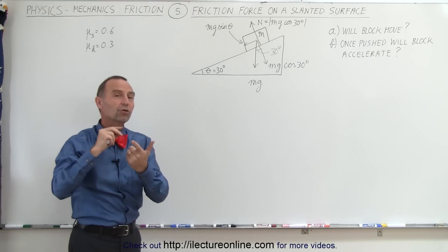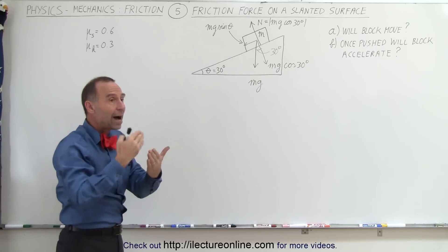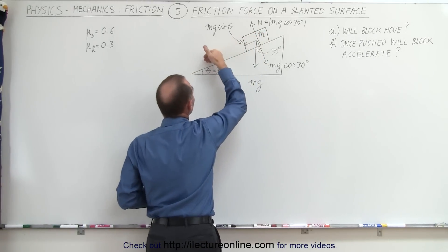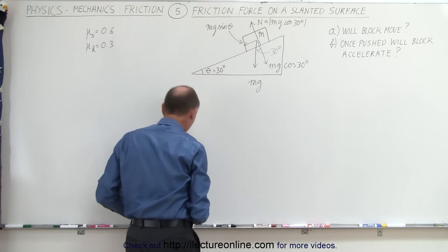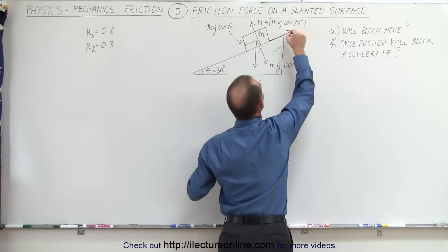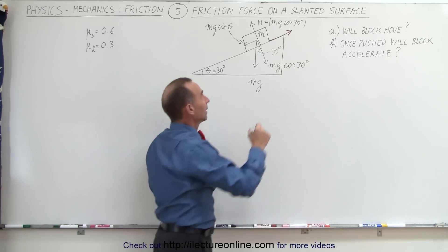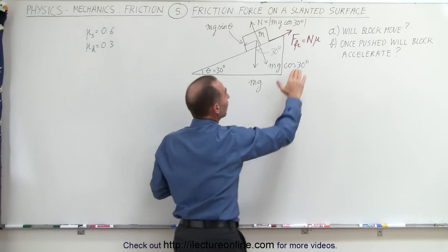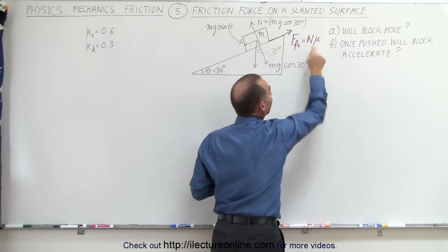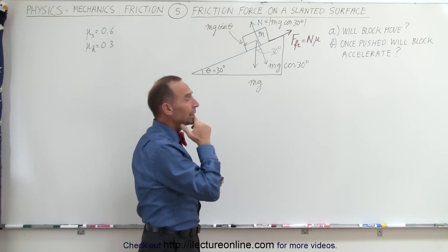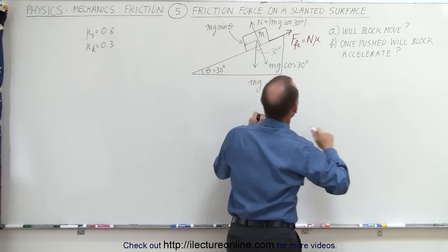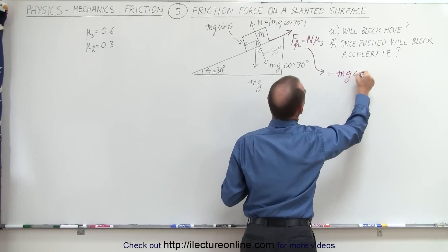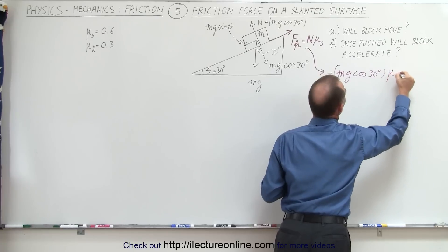Now the friction force: its direction is opposite to the motion the block would have if there were no friction. Without friction the block would slide down the incline, so the friction force is directed up the incline. The friction force equals the normal force times mu — the static coefficient if the block is not moving, or the kinetic coefficient if it is moving. Assuming the block is not moving, the friction force equals mg cosine 30 degrees times the coefficient of static friction.